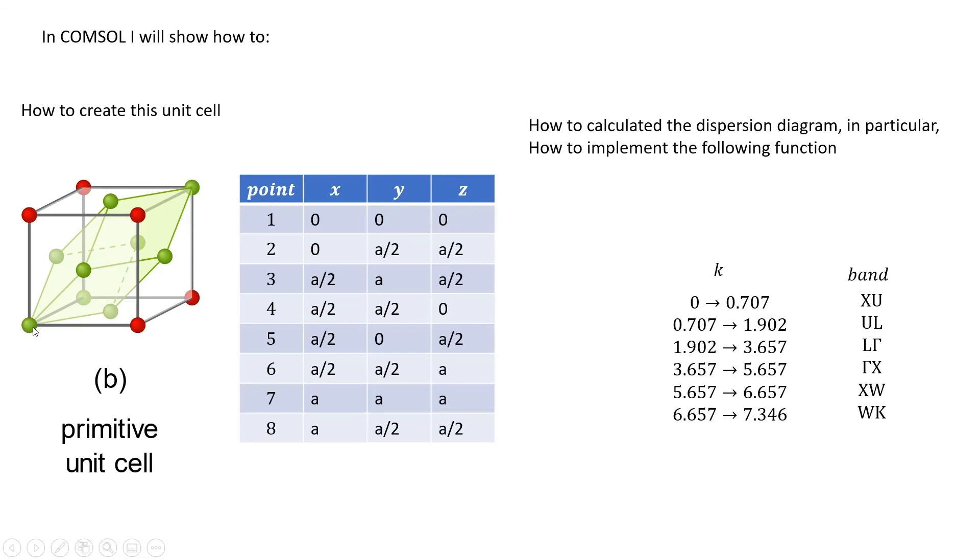Point 1 has 0, 0, and 0 for x, y, z. Point 2 has 0, a divided by 2, a divided by 2, and you can actually derive these indices from your primitive unit cell length.